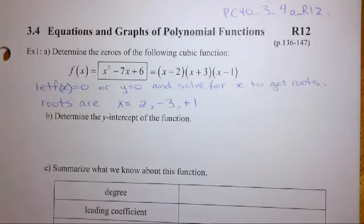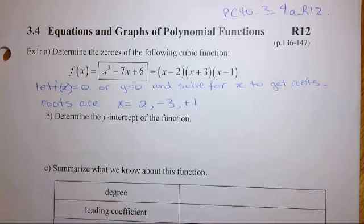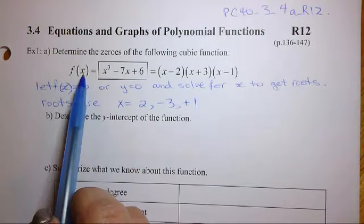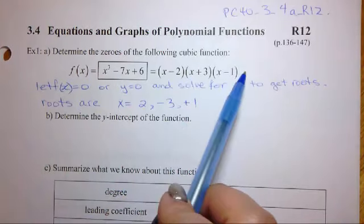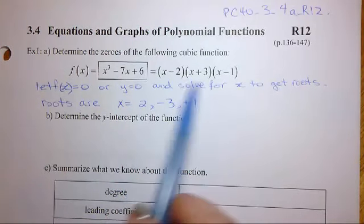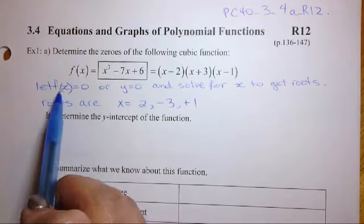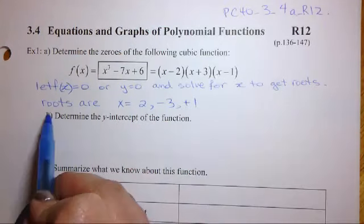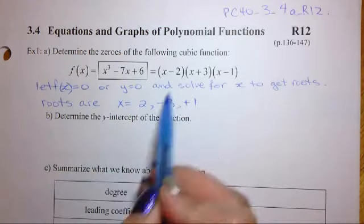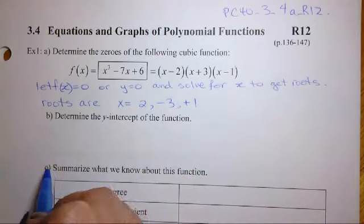Now, what we're going to do is we're going to look at this polynomial here, and we're going to dissect it, I guess you can say, and then we're going to sketch the graph of it. So the first thing here, it's already given to you in its factored form, and this is what we're going to use to help us do the actual graphing. So in order to figure out the roots, we set f of x equal to 0 or y equal to 0 and solve for x to get the roots. So the roots for this equation here are 2, negative 3, and positive 1.